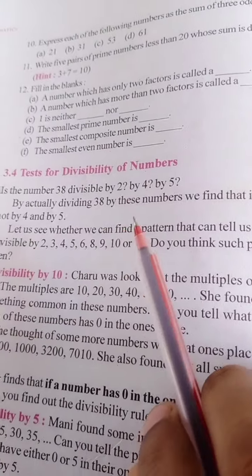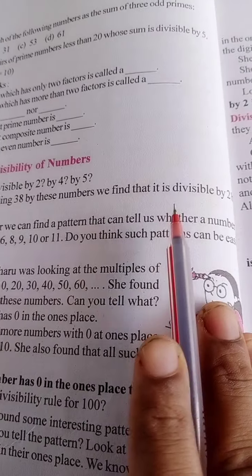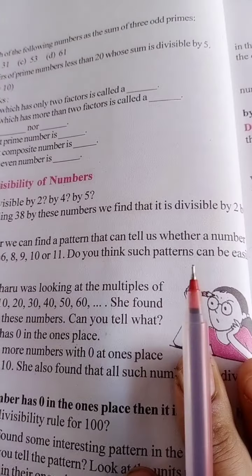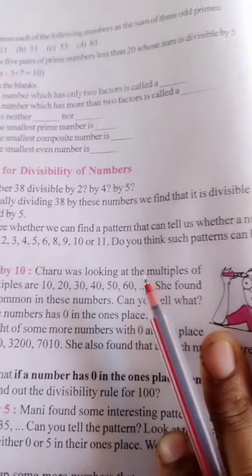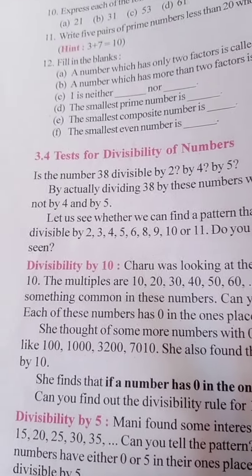But actually dividing 38 by these numbers, we find that it is divisible by 2, but not by 4 and not by 5.